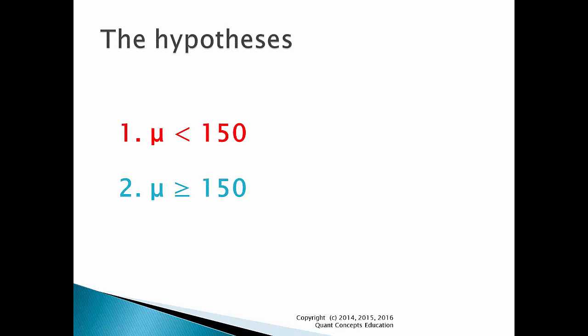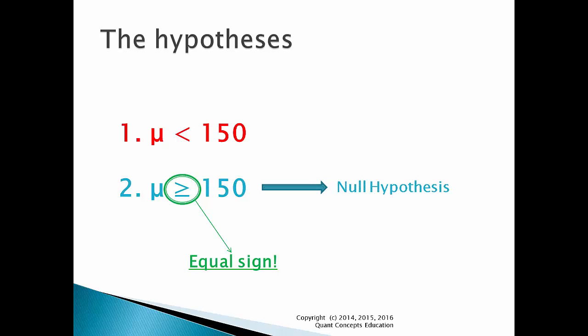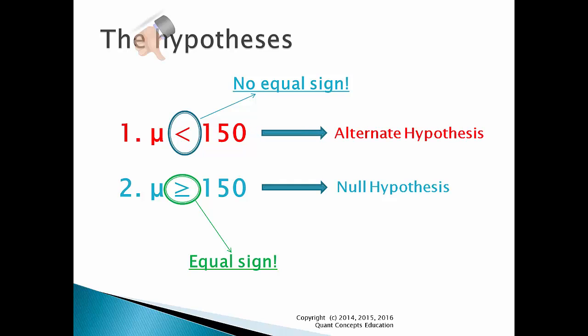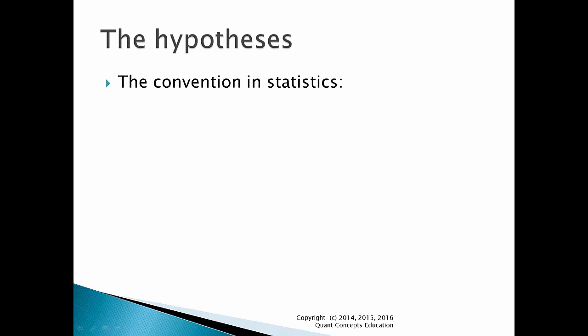So we have our 2 claims. Now the claim with the equal sign will be called the null hypothesis. The other claim without the equal sign is called the alternate hypothesis. Pretty easy so far. The convention in statistics is to set up the two hypotheses as follows. First we write down H0 — this is the symbol for the null hypothesis. Below that we write down H1 — this is the alternate hypothesis. Make sure you write down the null and alternate hypotheses in this order: the null first and the alternate below it.